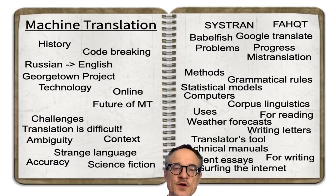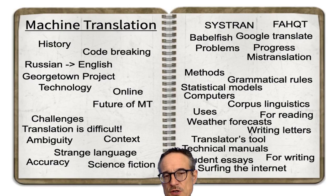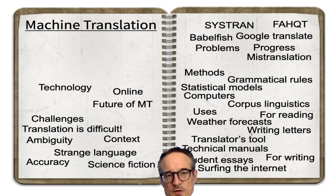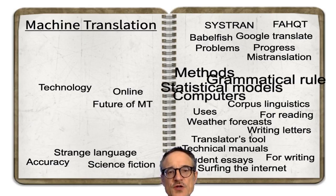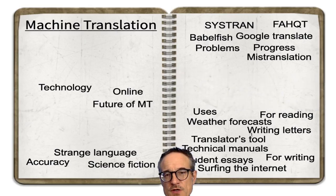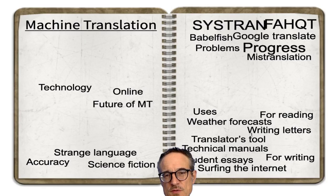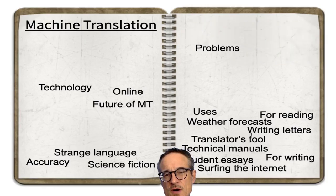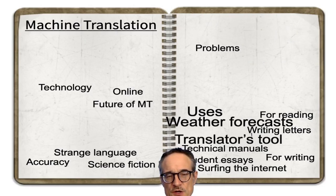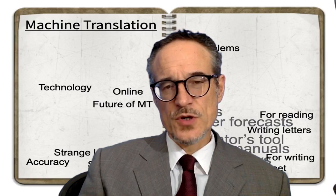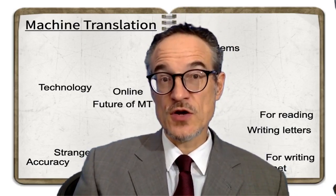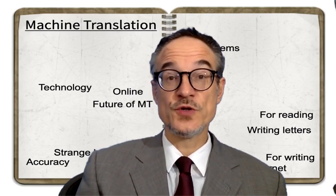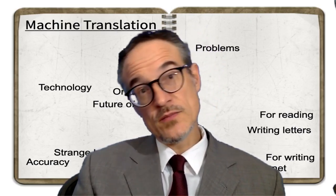We can take all these ideas when we're writing and put them into groups. So here's one broad topic area, here's another topic area — challenges — and here's another topic area, methods, different methods of machine translation. And this is progress, and here are some uses. We're left over with some ideas. When you're writing, there are usually some ideas left over. Sometimes you can use them for the introduction or the conclusion, sometimes for writing something else.